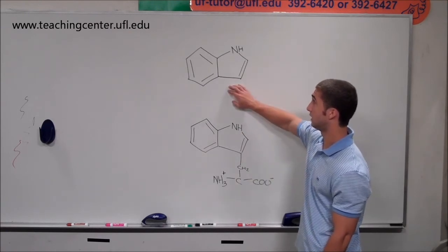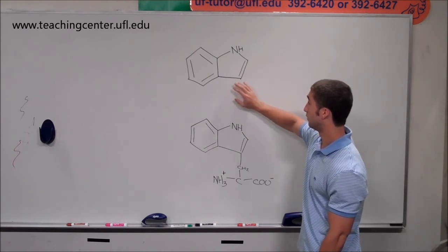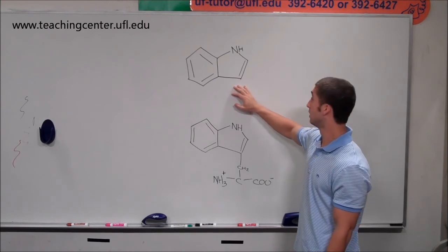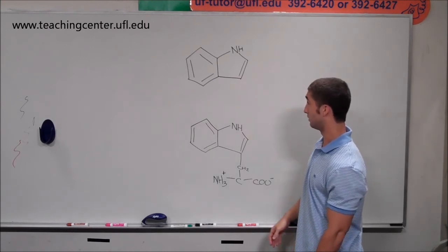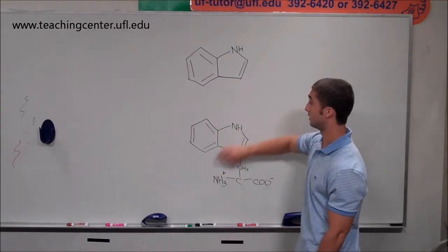While indole is a closely related compound to tryptophan, it has no charge, which makes it less polar and easier to go through the hydrophobic lipid bilayer. So the main reason why it's going to be able to cross easier is this is less polar than this.